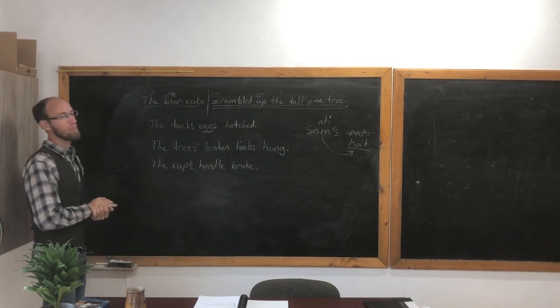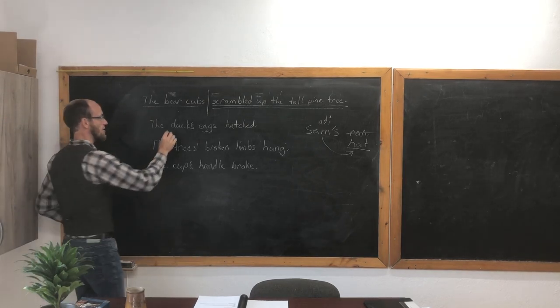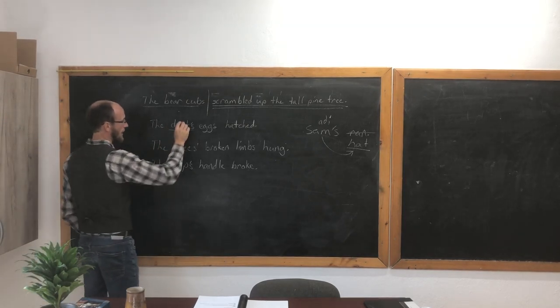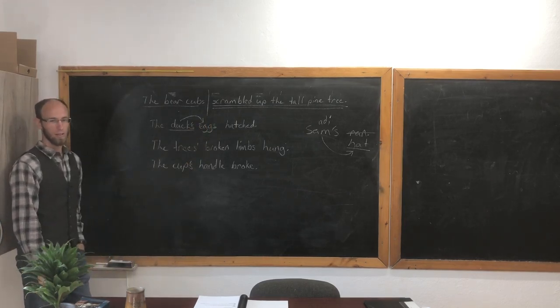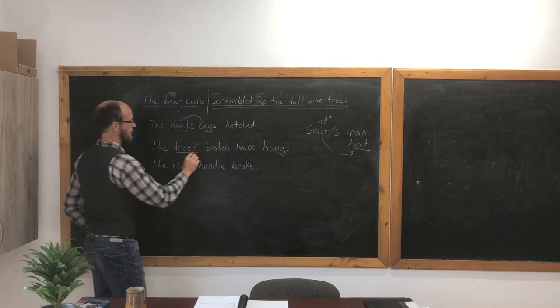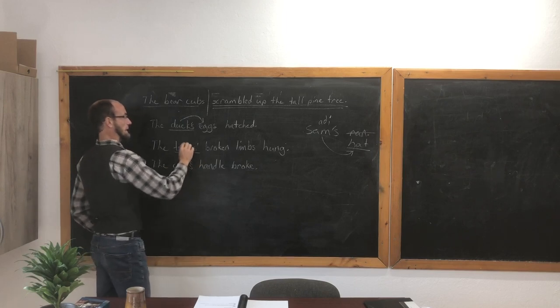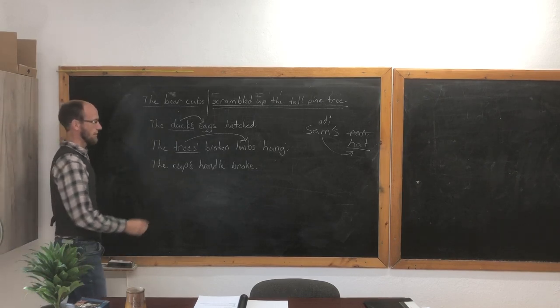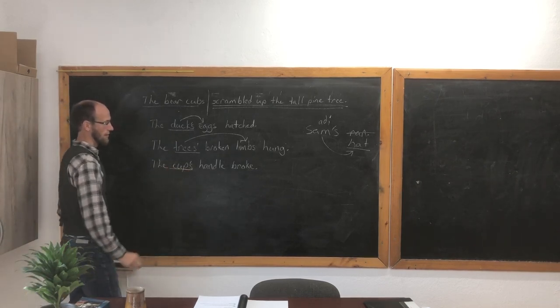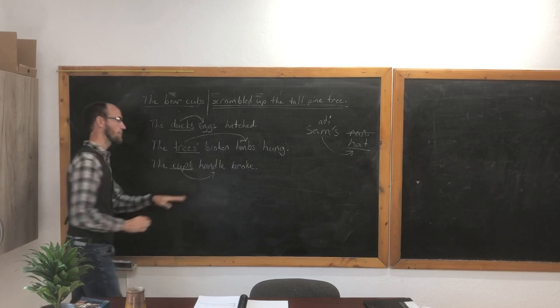Where is the possessive noun in the sentence? Ducks. And what does it modify? Eggs. Perfect. What's the possessive noun here? Trees. And what does it modify? Limbs. Good. And what's the adjective here? Cups. And what does it modify? Handle. Good. Let's diagram this last one.